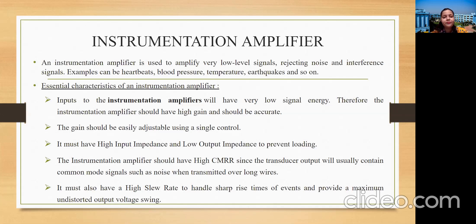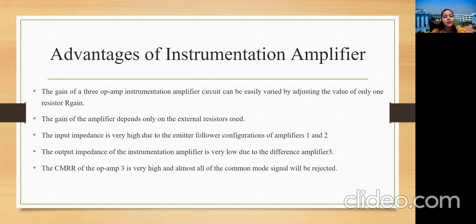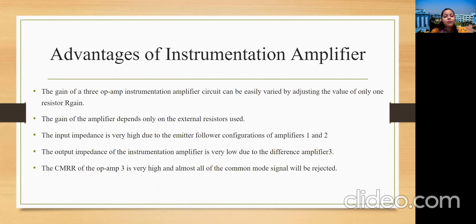The instrumentation amplifier is called a three op-amp instrumentation amplifier because it is designed using three op-amps. Its advantages include: gain can be easily varied by adjusting the value of only one resistor; input impedance is very high due to the emitter follower configuration of op-amps one and two; output impedance is very low due to difference amplifier op-amp three; and the CMRR of op-amp three is very high, rejecting almost all common-mode signals.